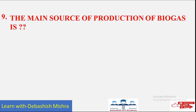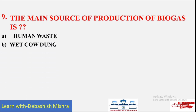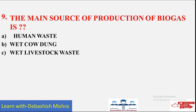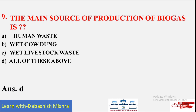The main sources of production of biogas — options are: A) Human wastage; B) Wet cow dung; C) Wet livestock waste; D) All of these. The answer is D — all are correct. The main sources of production of biogas are human wastage, wet cow dung, and wet livestock waste.